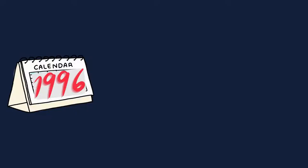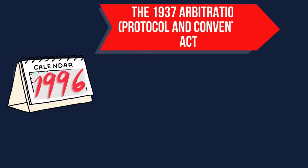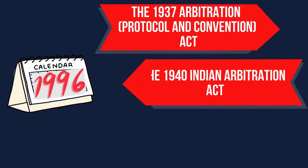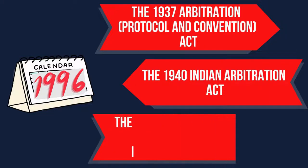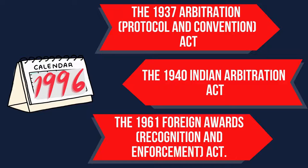Until 1996, the law governing arbitration in India consisted mainly of three statutes: the 1937 Arbitration Protocol and Convention Act, the 1940 Indian Arbitration Act, and the 1961 Foreign Awards Recognition and Enforcement Act.